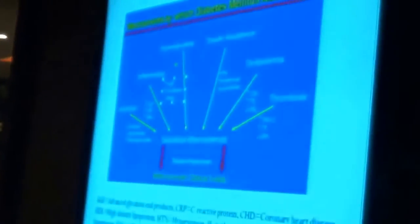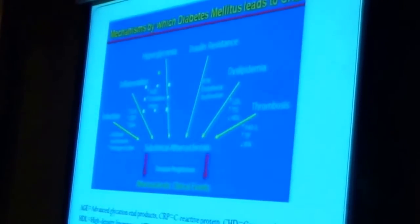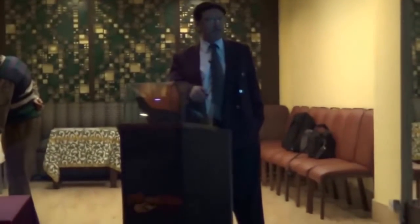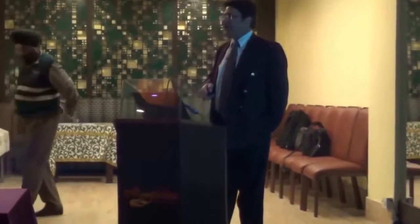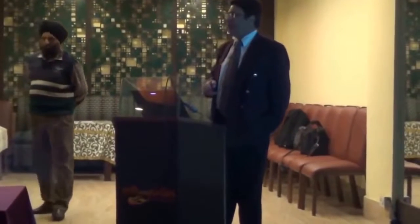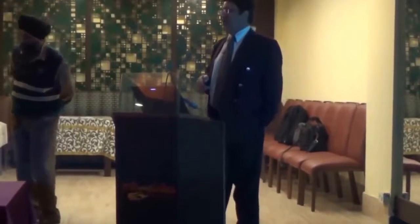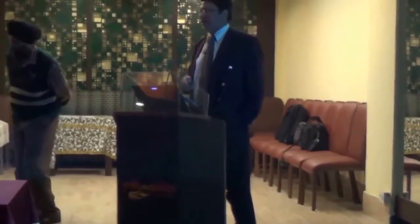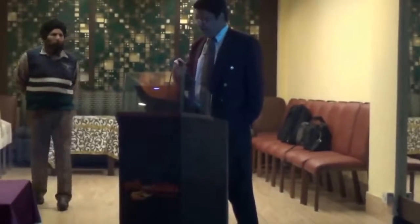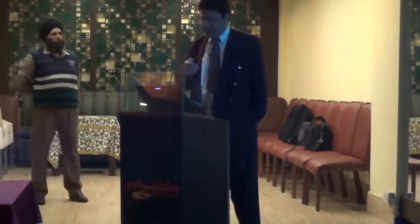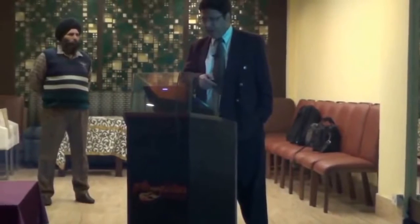Diabetes affects how risk factors collectively produce subclinical atherosclerosis, and as the disease progresses over a period of 10, 15, or 20 years, patients develop atherosclerotic clinical events in the form of stable angina, unstable angina, myocardial infarction, heart failure, and even death.